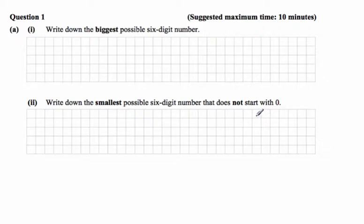Part A says write down the biggest possible six digit number. Well, the biggest single digit we know is 9, so it's just going to be six nines: 999999.